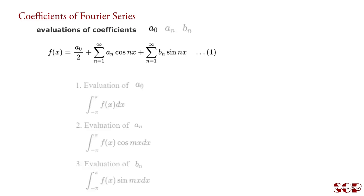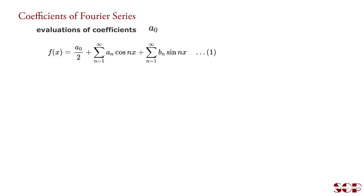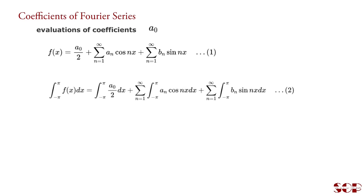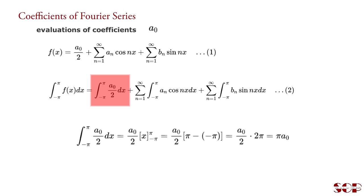For evaluation of Fourier coefficient a₀, we integrate the entire series from minus pi to pi with respect to x. The first term on the right-hand side gives the integration of a₀/2 dx from minus pi to pi, which equals a₀/2 times x evaluated from minus pi to pi. Substituting the limits gives a₀/2 into (pi minus minus pi), which equals a₀/2 into 2pi, and finally gives pi·a₀.